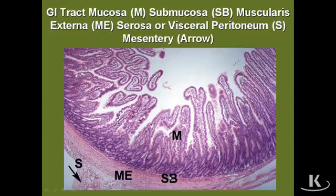The submucosa is mainly connective tissue, but depending on the parts of the GI tract, as appropriate, it may contain a variety of glands.